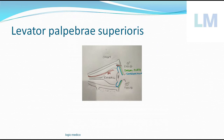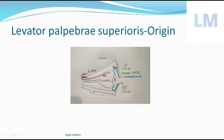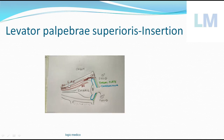The levator palpebrae superioris is located at the junction between the eyeball and the roof of the orbit. It takes origin from the roof of the orbit, specifically from the orbital surface of the lesser wing of the sphenoid bone — that is the origin. In simpler terminology: roof of the orbit, posterior aspect. It then continues forwards, where it splits up into three laminas.